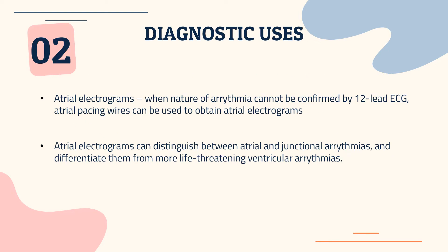For some diagnostic uses — atrial electrograms: when the nature of the arrhythmia cannot be confirmed by 12-lead ECG, atrial pacing wires can be used to obtain atrial electrograms. These atrial electrograms can distinguish between atrial and junctional arrhythmias and differentiate them from more life-threatening ventricular arrhythmias.